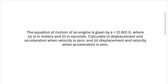Hello friends, welcome to my channel. Today we are going to solve an engineering mechanics previous year question. The equation of motion of an engine is given by s = 2t minus 6t² minus 5, where s is in meters and t is in seconds. Calculate: (1) displacement and acceleration when velocity is zero.